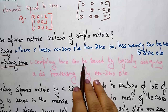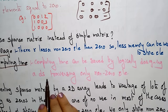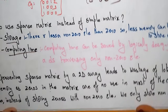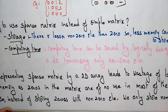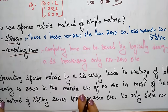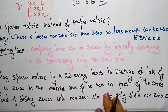Coming to the computing time, computing time can be saved by logically designing a data structure traversing only non-zero elements, rather than visiting all complete elements for searching. If you are visiting all elements, it is better to traverse only through non-zero elements — then you can find the element in less time. Representing a sparse matrix by a two-dimensional array leads to wastage of lots of memory, as zeros in the matrix are of no use in most cases.